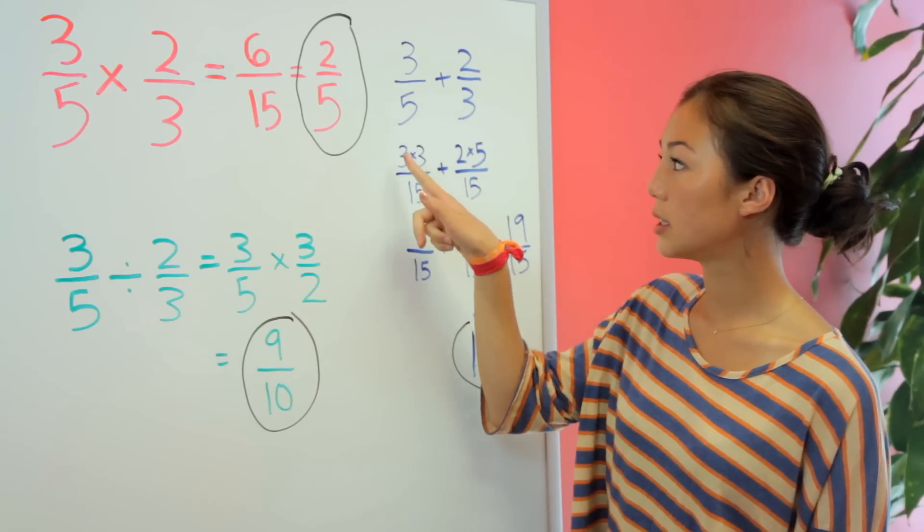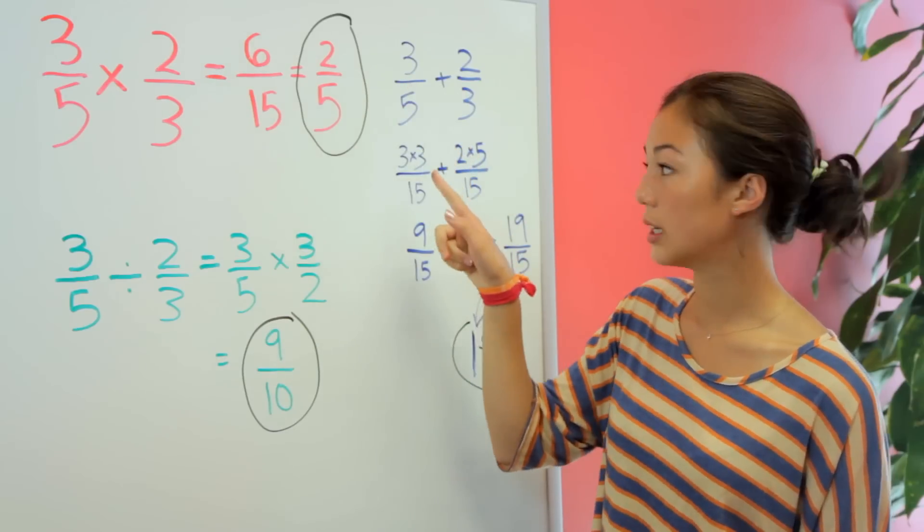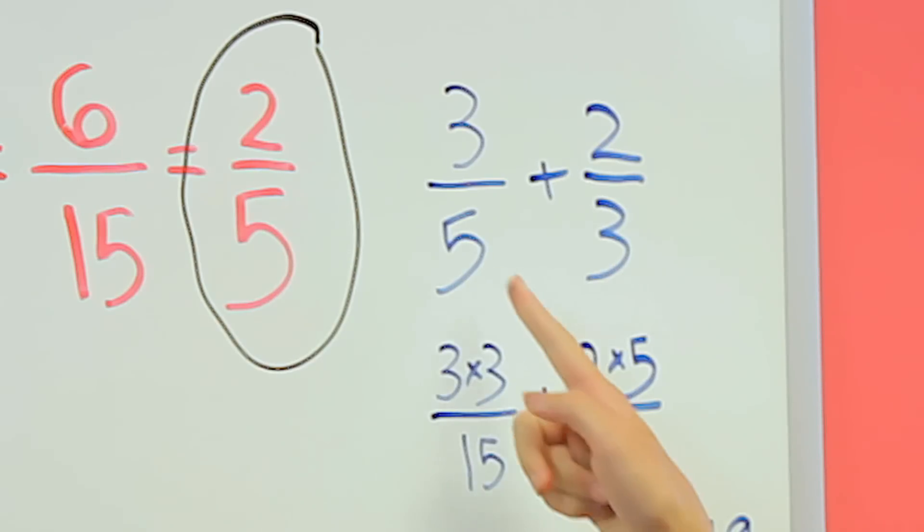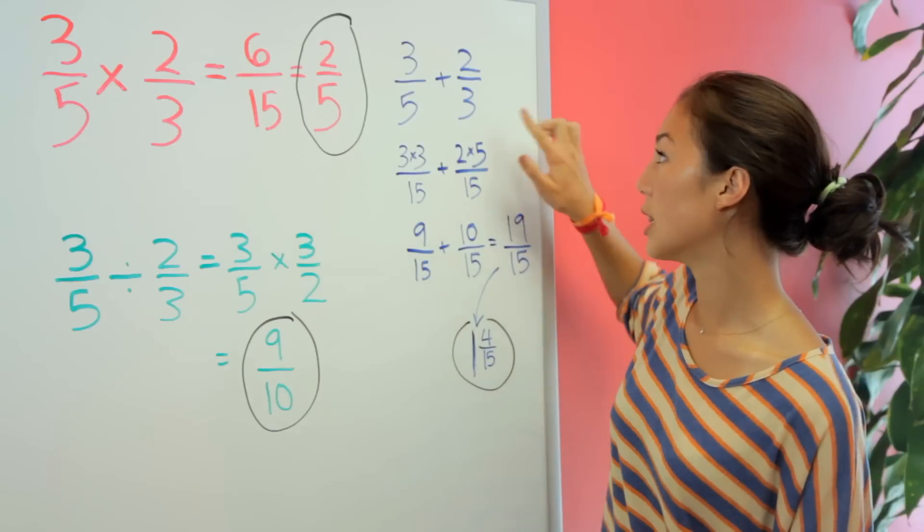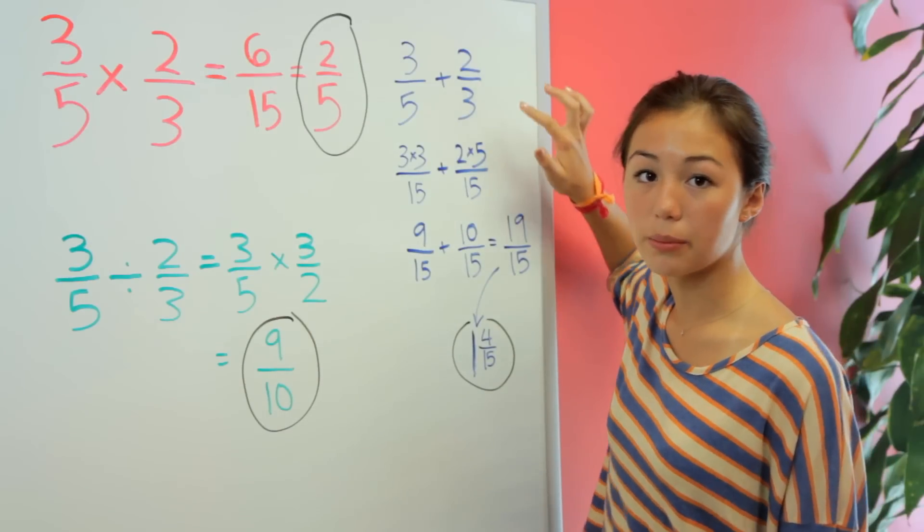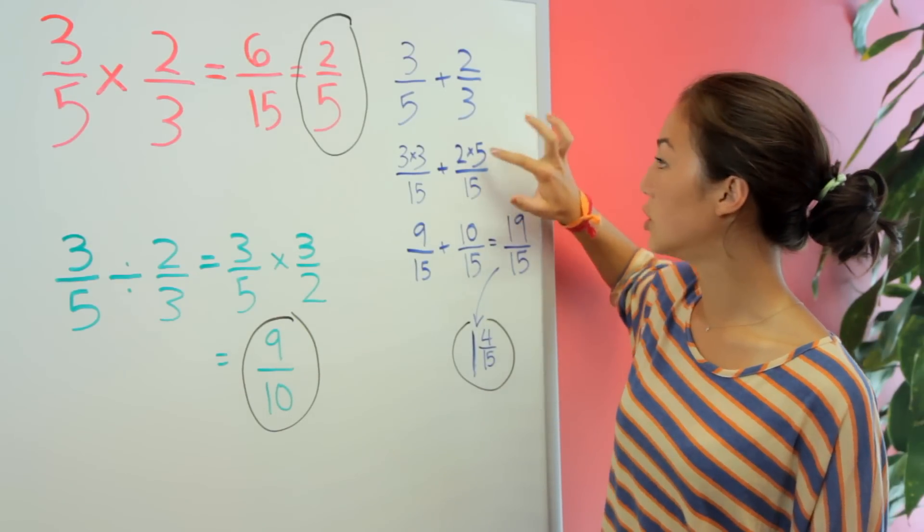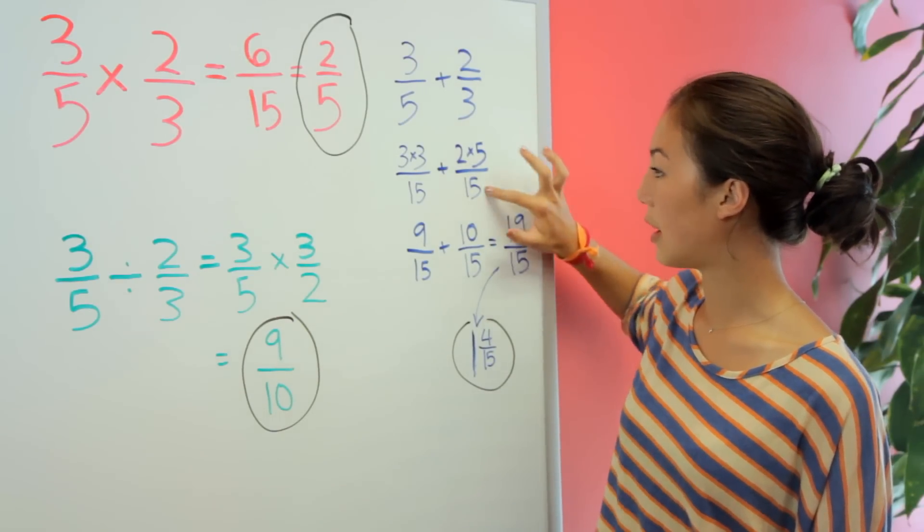So we're going to multiply the top and bottom of this fraction by 3, so 3 times 3, and then 5 times 3, get 15. And then this fraction, we're going to multiply the top and bottom by 5, so 2 times 5 up here, and then 3 times 5, 15.